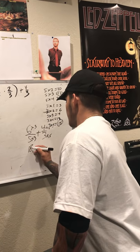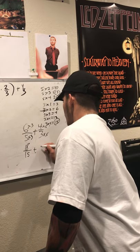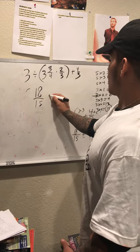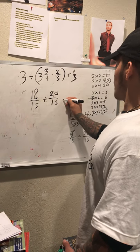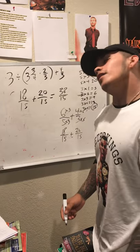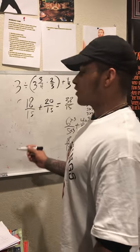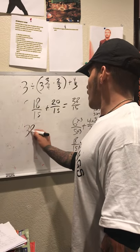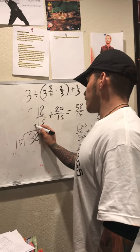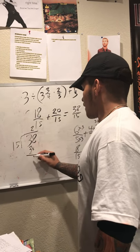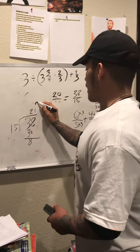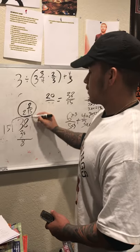That comes out to 18 over 15 plus 20 over 15, which equals 38 over 15. We can simplify that by dividing 38 by 15 to turn it into a mixed number. 15 goes into 38 twice — 2 times 15 equals 30 — with 8 left over, so our answer is 2 and 8 fifteenths.